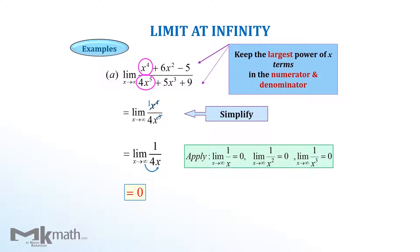Since the denominator becomes very large — that is 1 divided by a very large number — the answer is getting closer and closer to zero. Therefore, the limit is zero.